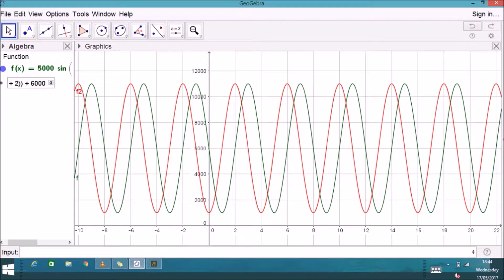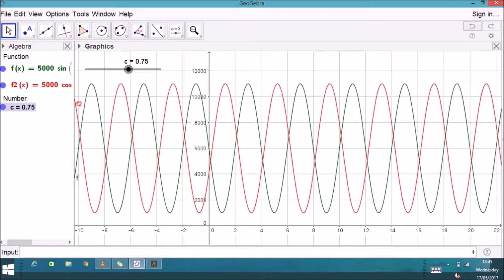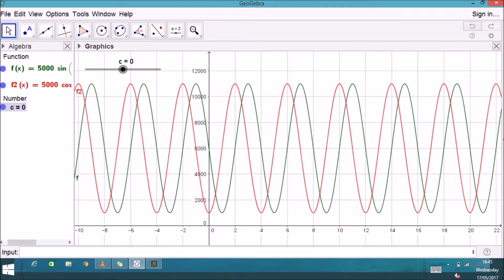So they look identical except one's been moved along and I have to figure out how I'm going to move it back. So I'll put in a slider c to see how much we have to move it by to make it fit straight onto the sine function and be an identical function.